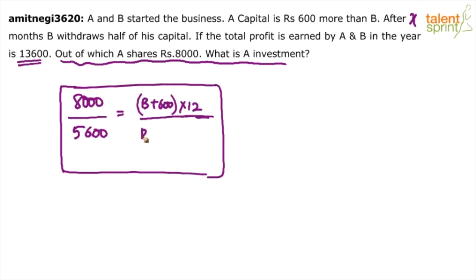Otherwise, if let's say this is x months, you have to say this would be B into x plus B by 2 into 12 minus x.